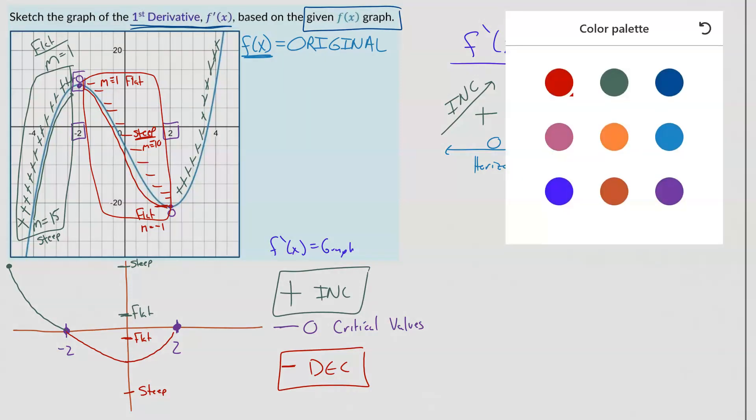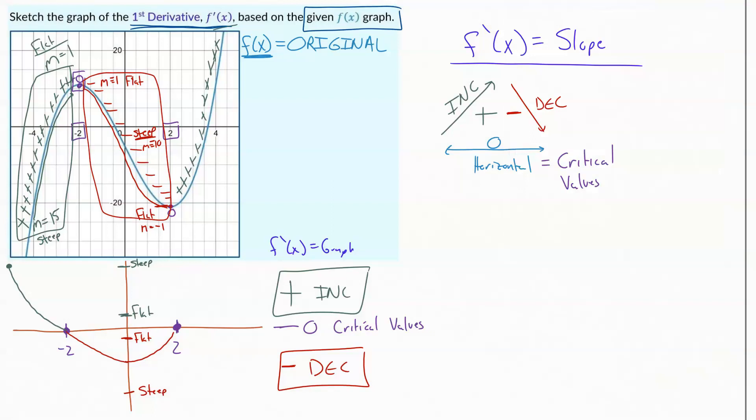Now we're done with that section and we look to the right of our zero. And so we are looking at this section. So again, we're starting somewhere flat and m equals 1 and we're heading to a steep area. So an m that's equal to 15.